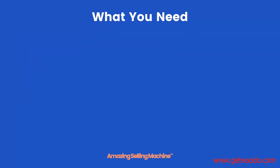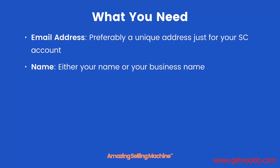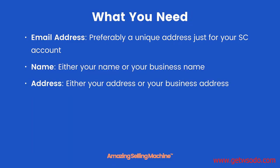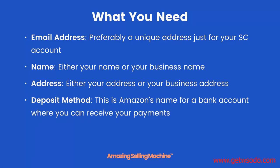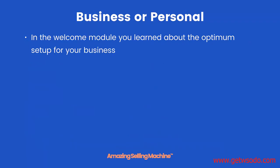My personal recommendation is to go ahead and get it set up sooner rather than later. What you need: first, an email address — preferably a unique address just for your Seller Central account. Then your name, and either your name or your business name. The address — either your personal or business address. The deposit method is Amazon's name for a bank account, essentially where you receive your payments. Lastly, the charge method — a credit or debit card used to pay for your monthly subscription and advertising costs.